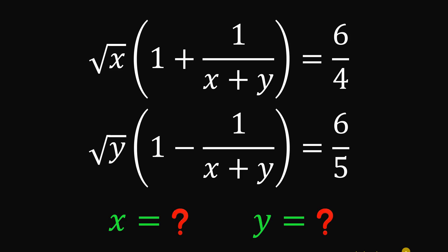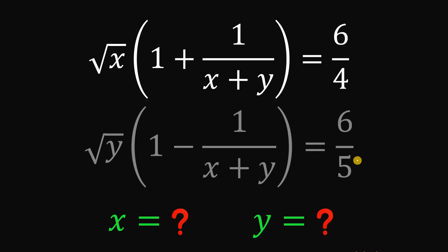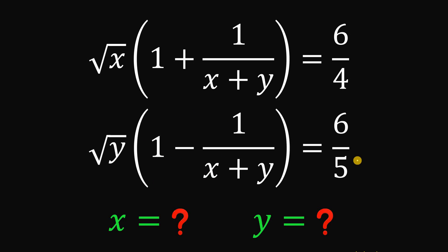Today, we will answer this math Olympiad question. Given this equation: square root of x multiplied by 1 plus 1 over (x plus y) equals 6 over 4, and square root of y multiplied by 1 minus 1 over (x plus y) equals 6 over 5. The goal is to find the values of x and y that satisfy this equation.